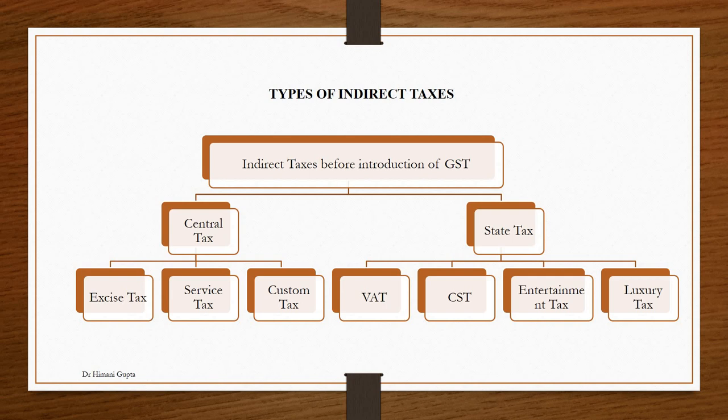Before the introduction of GST, there were different taxes which were levied on consumers. In India we have two types of government: central government and state government. Both types of governments have different expenditure, and to fund such expenditure both need revenue. Before GST, some taxes were collected by the central government, named as central tax, and some were collected by the state government, named as state tax.